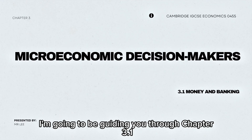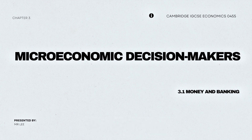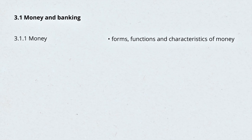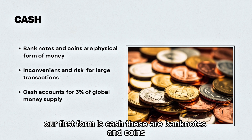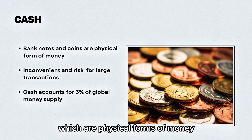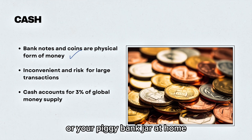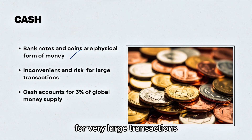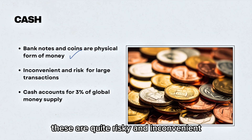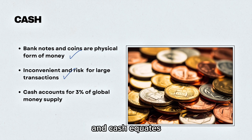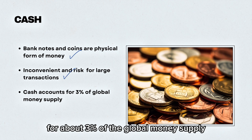In this video I'm going to be guiding you through Chapter 3.1 Money and Banking. Firstly we need to look at one of the forms of money. Our first form is cash — these are bank notes and coins which are physical forms of money. This is the money that you put in your wallet or your piggy bank jar at home. For very large transactions these are quite risky and inconvenient, and cash equates for about 3% of the global money supply.